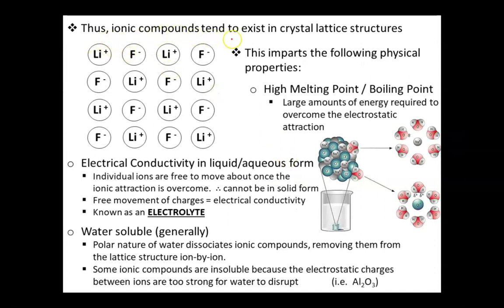Now if you recall, ionic compounds tend to exist in a crystal lattice structure. So a crystal lattice structure is one where it just repeats over and over again, positive, negative, positive, negative, positive, negative. This imparts the following physical properties.